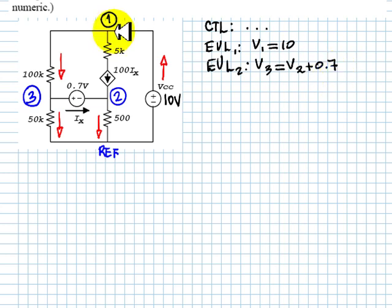KCL for node one. Currents going in: this unknown current, I'm going to call that ICC, equals 100 times Ix, which is the current in this branch, plus V1 minus V3 over 100k.